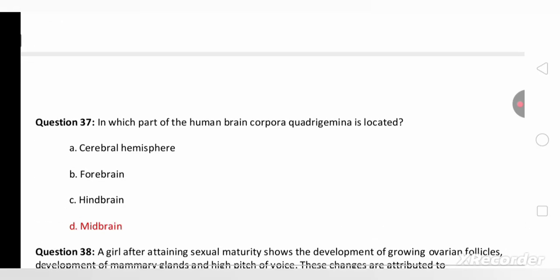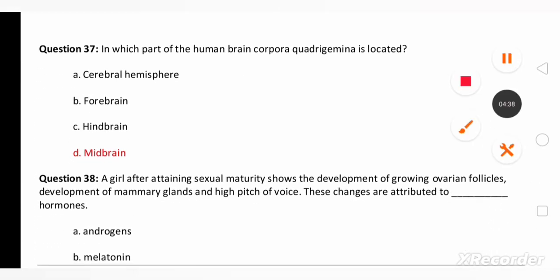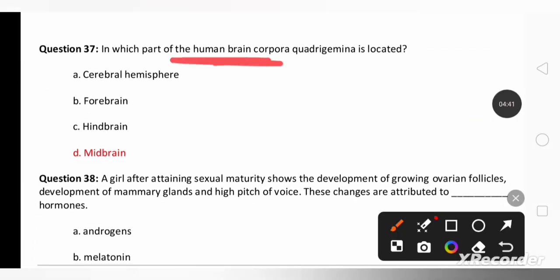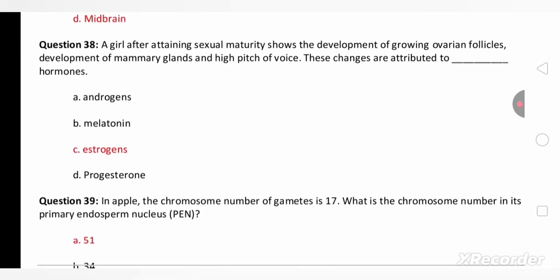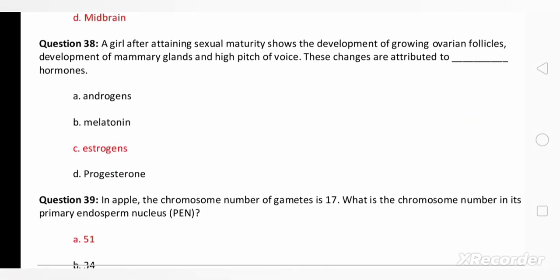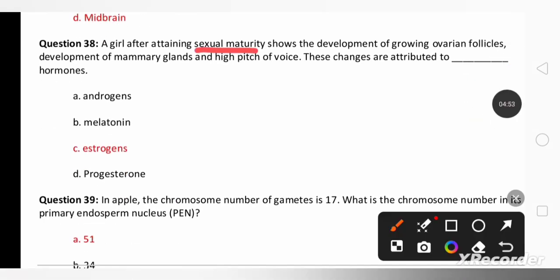Let us move to the next question. Which part of the human brain? Corpus quadrigemina is located in the midbrain. A girl after attaining sexual maturity shows development of growing ovarian follicles, development of mammary gland and high pitch of voice. This is because of the secretion of female sex hormone estrogen.